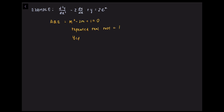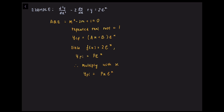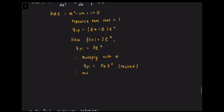Consider the following example. The auxiliary equation is m² - 2m + 1 = 0. The AQE has a repeated real root, which is 1. Thus, the complementary function y_CF is (ax + b)·eˣ. According to the table, since f(x) = 2eˣ, the particular integral y_PI is p·eˣ. However, this function already appears in the complementary function.